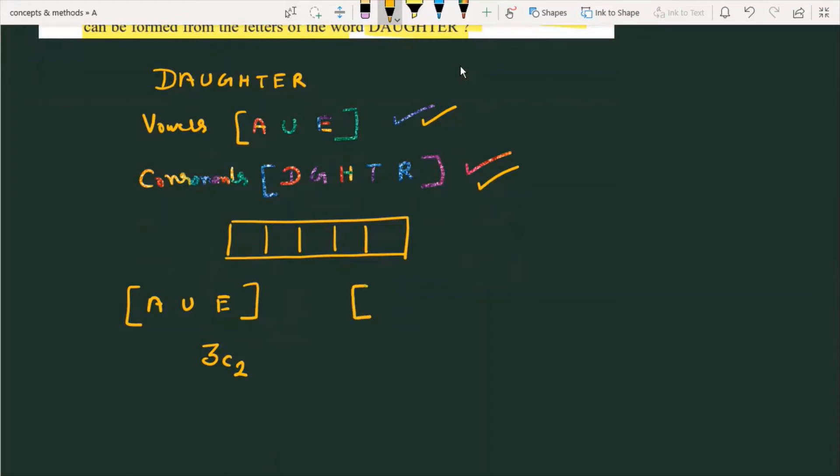Similarly, the consonants which are D, G, H, T, and R—I have three consonants required, so the number of ways will be 5C3. So the total number of selections are 3C2 into 5C3.